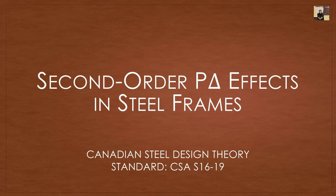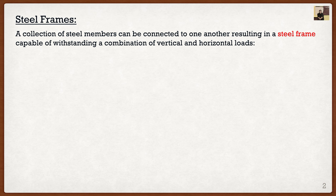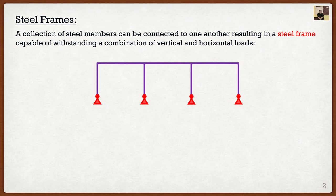Alrighty, so with that being said let's jump into the theory. We're going to start with the idea of steel frames. At this point in the design class we've always talked about members by themselves — we talked about a beam isolated by itself, a column isolated by itself — but we know that in reality beams and columns are all joined together to form what we would call a steel frame. We can take a bunch of these beams and columns, join them together, and the result would be a steel frame capable of standing a combination of vertical and horizontal loads.